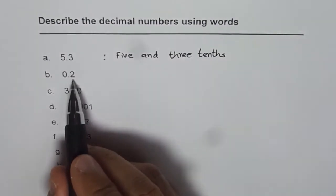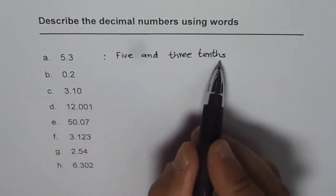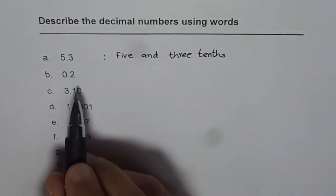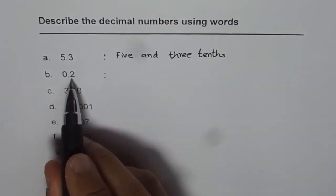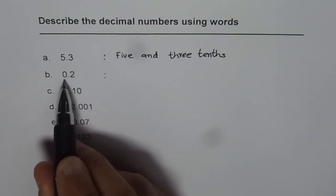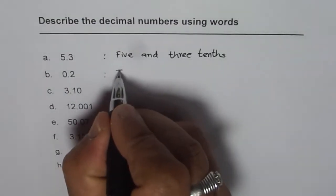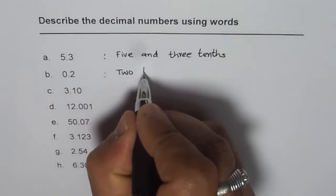We have to see where the number ends and that position comes here whenever you are working with decimal numbers. Now the second one is 0.2, which could be written as 2 tenths. There is no need to write 0, so here we can write this as 2 tenths.